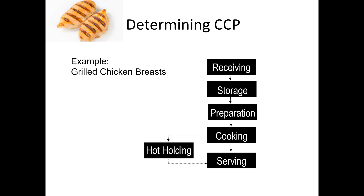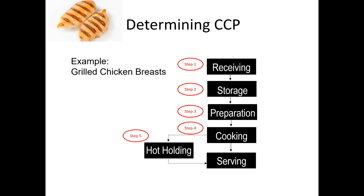The first thing would be to receive the ingredients into your restaurant, to store the chicken breasts, to prepare them for cooking, to cook the chicken breasts, to hot hold them. So when people come in — perhaps it's a deli counter — you're holding your chicken breasts there for your next customer and then you serve it up. That is the process of grilling chicken breasts.